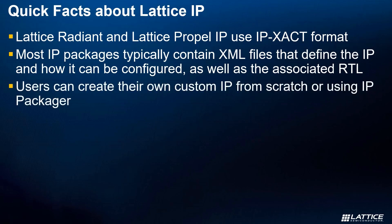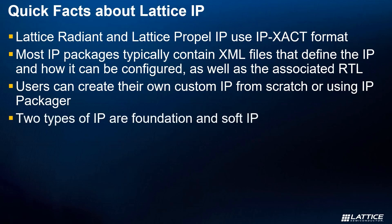There are two main methods for creating IP in the Lattice tool flow. IP packages can be created entirely from scratch by creating your own XML files to define the IP package, or by using Lattice IP Packager to easily generate the required XML files automatically. Another quick fact is that there are two main types of IP. The first type are Foundation IP, which come with each Radiant and Propel tool installation and are tied to a specific version of each software.